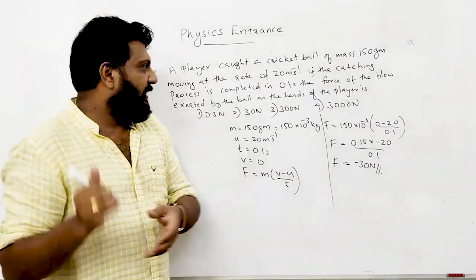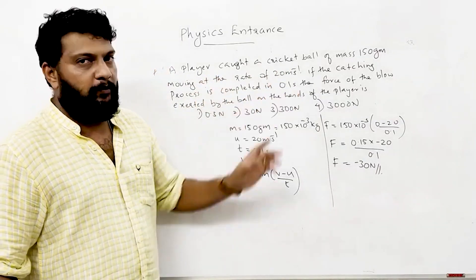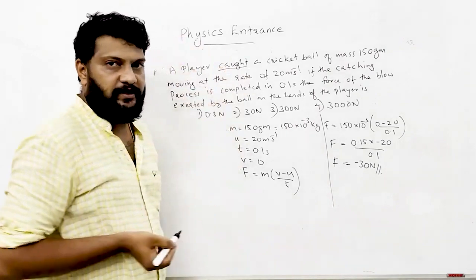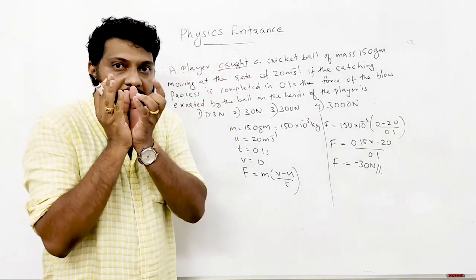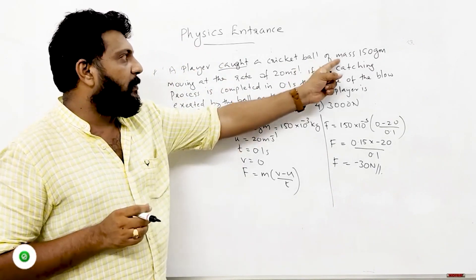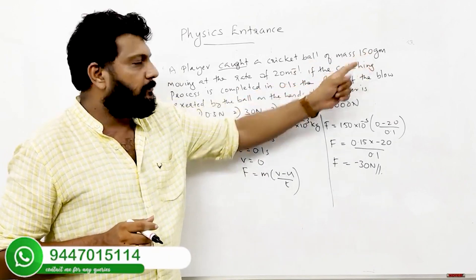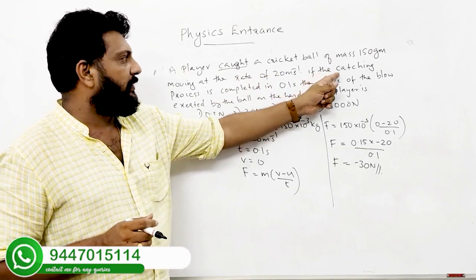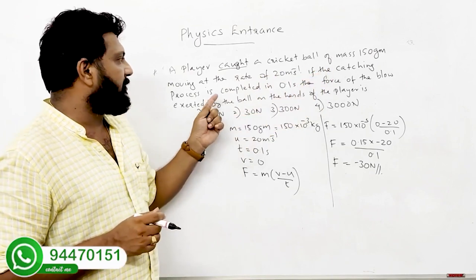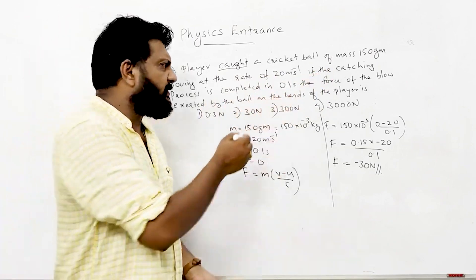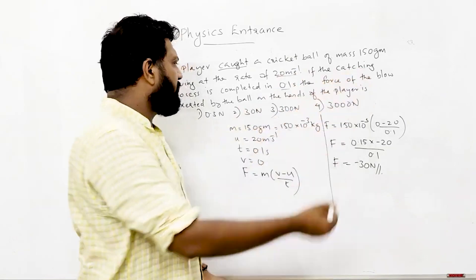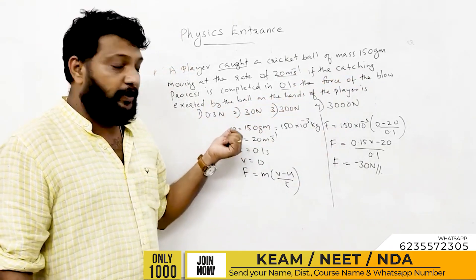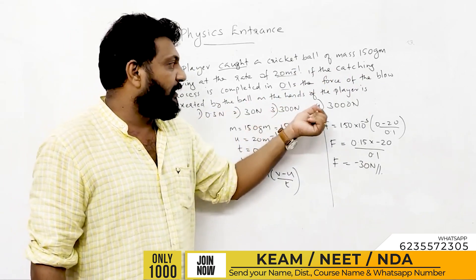A player catches a cricket ball. The cricket ball has a mass of 150 grams moving at a rate of 20 m/s. If the catching process is completed in 0.1 seconds, the force exerted by the ball on the hands of the player — options are 0.3 N, 30 N, 300 N, 3000 N.